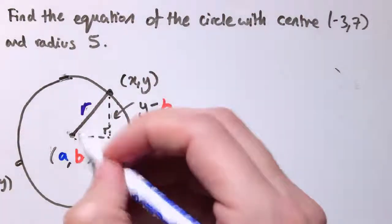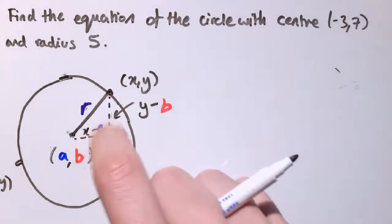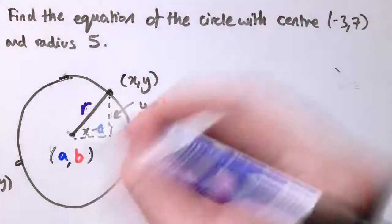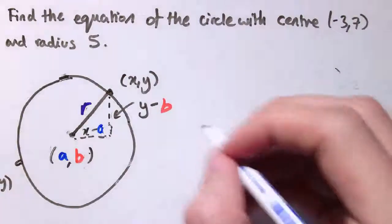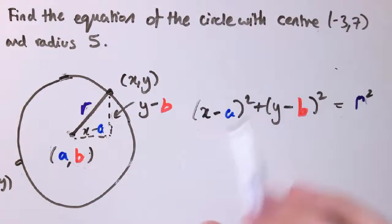The distance here would be y minus whatever this value is here, y minus b. This distance here would be x minus a. That's not an r, that's just a right angle in that triangle. And it would be that distance there is r.